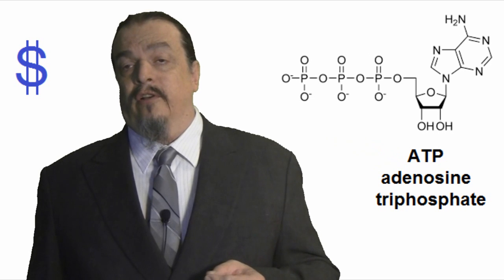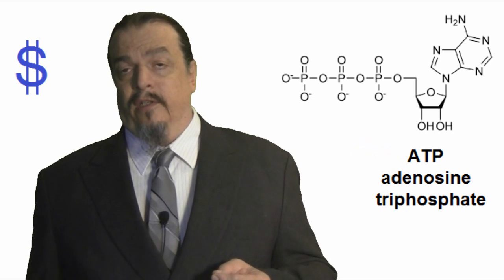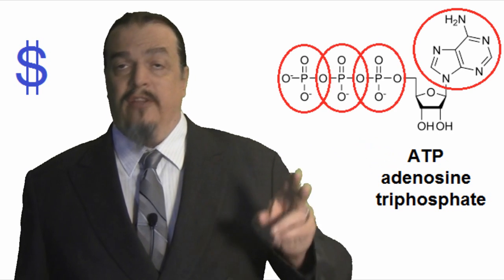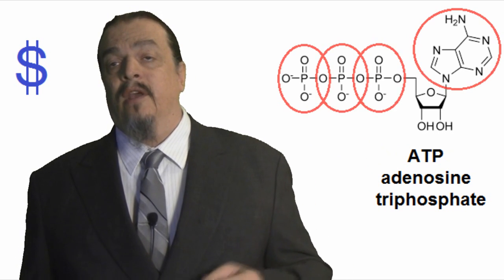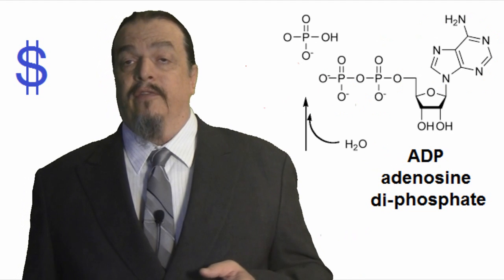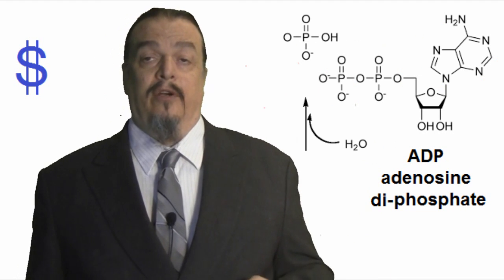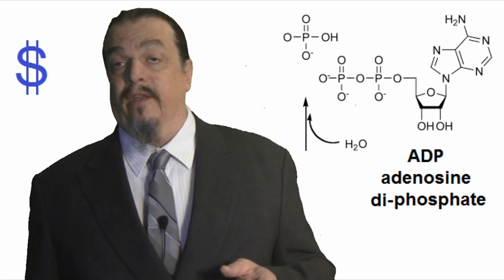You can see why it's called adenosine triphosphate if you look at a model of its molecular structure. Adenine forms the base of the molecule, which has three, hence triphosphates, attached to it. Water helps break the bonds between the phosphate groups and the molecule. This process is called hydrolysis. Hydro, meaning water, and lysis, refers to breaking things.